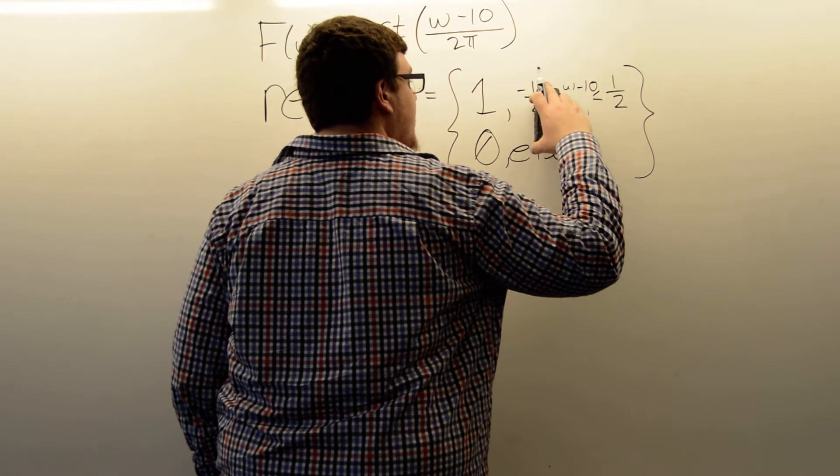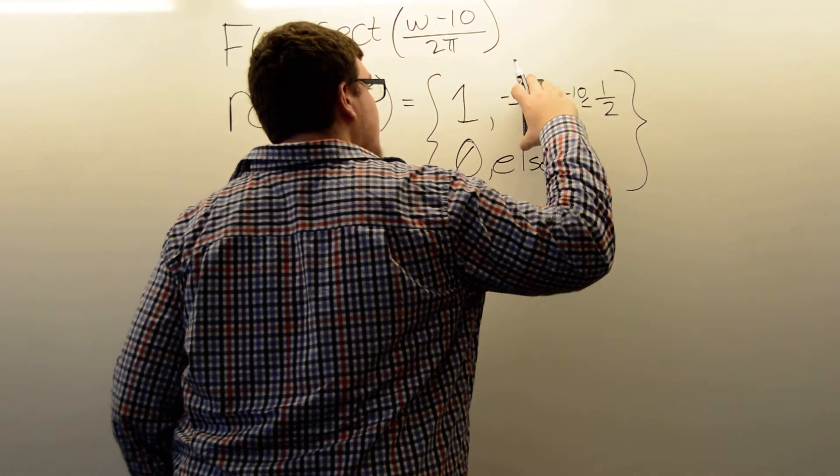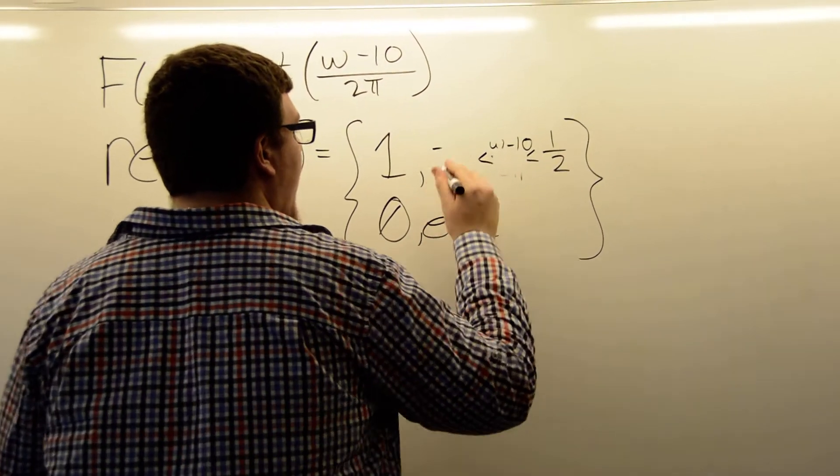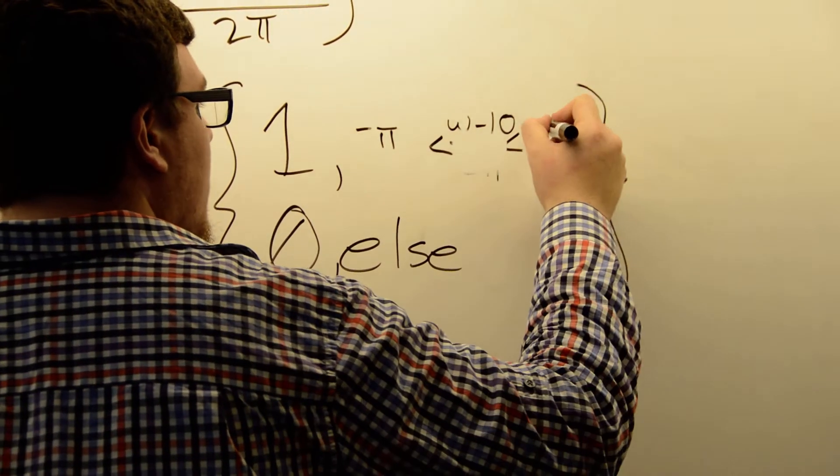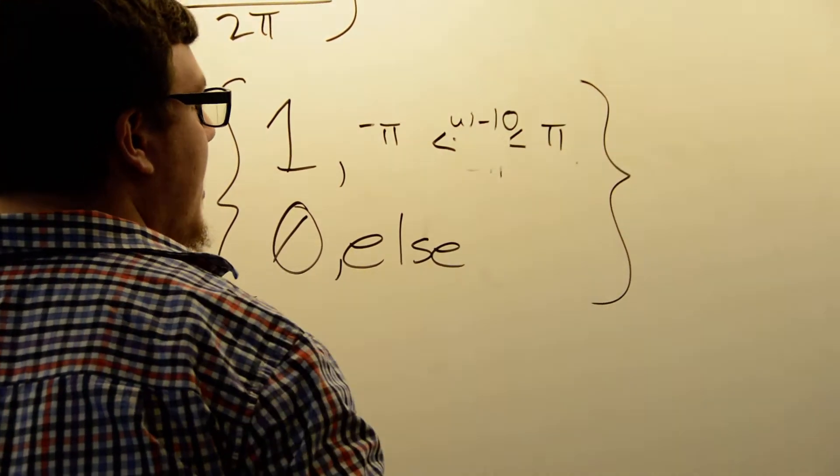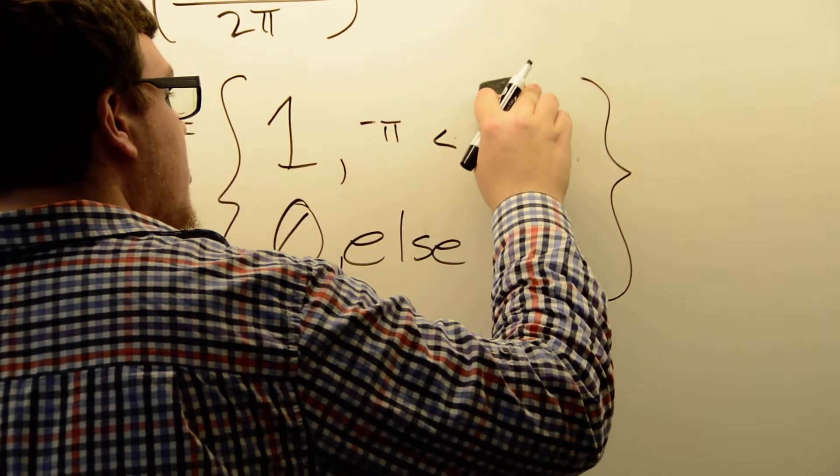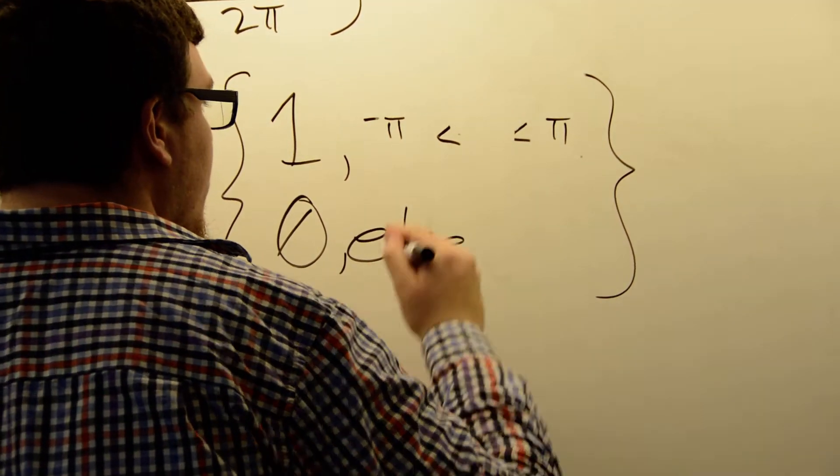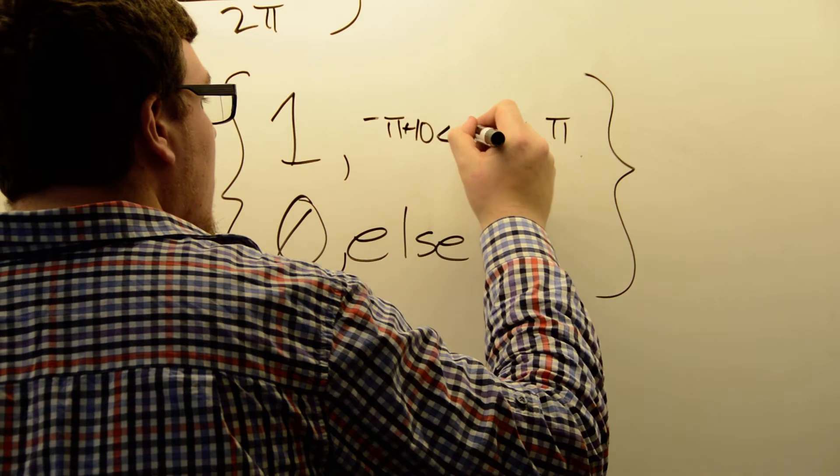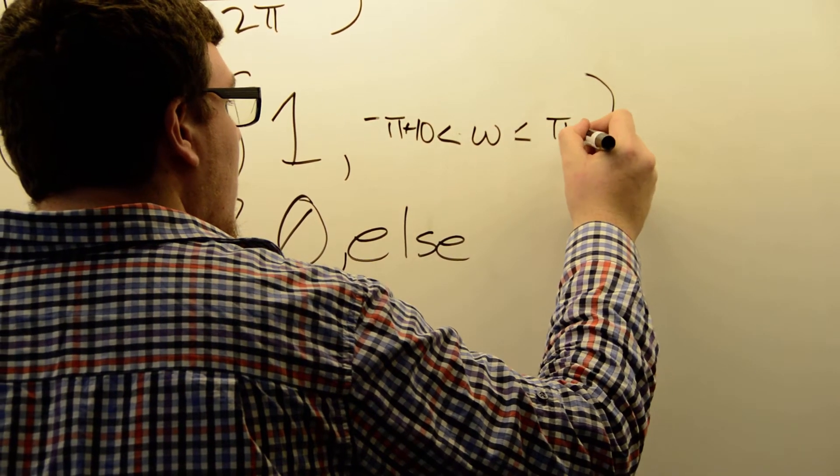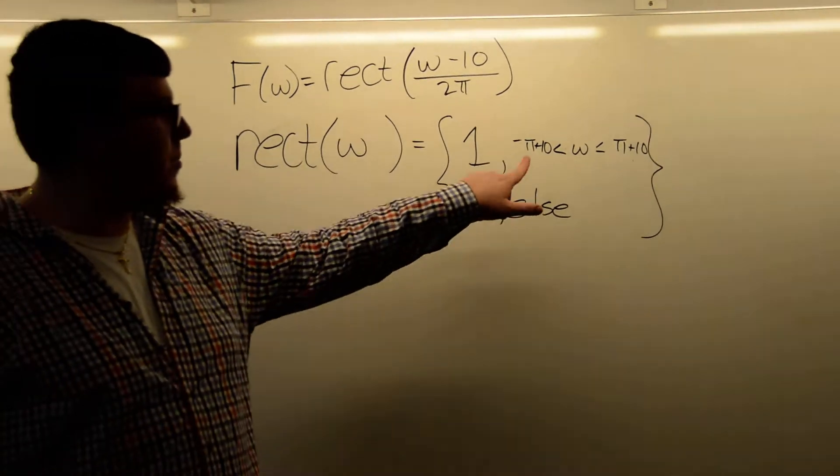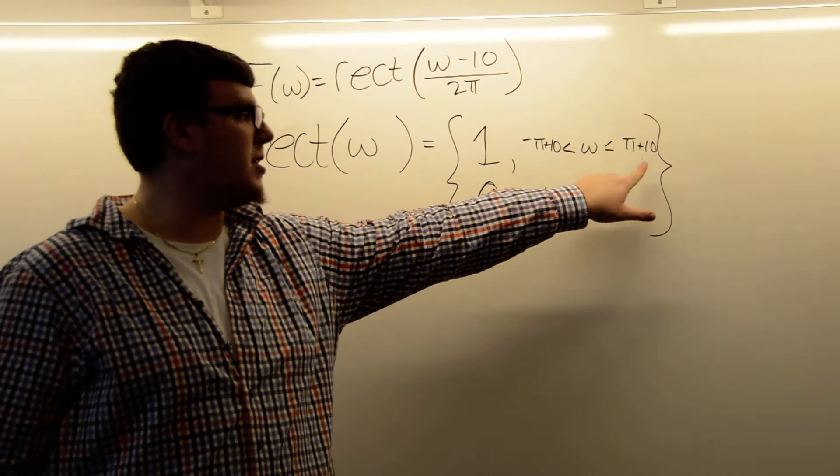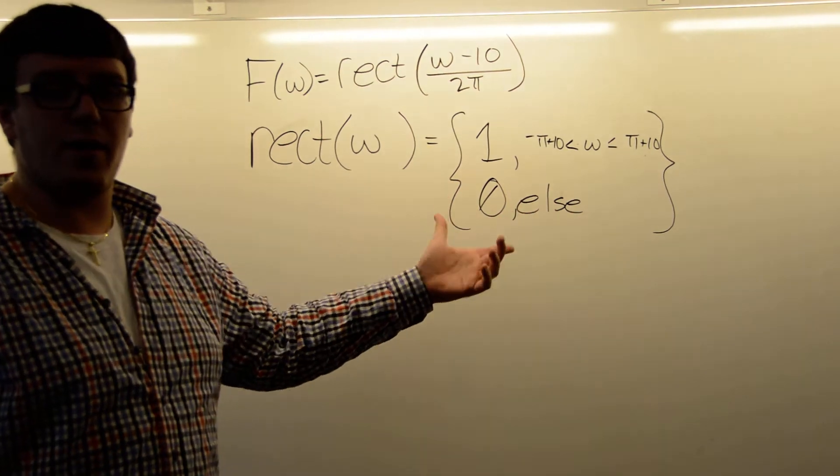Well, I guess it's on all three sides this time. So we just get a minus π to π. And then add 10 to both sides and we get back just ω in the middle. So this function is 1 between 10 minus π and 10 plus π and 0 otherwise.